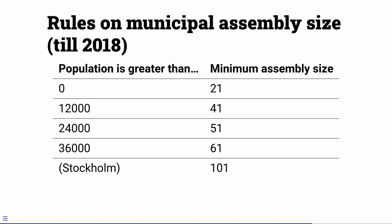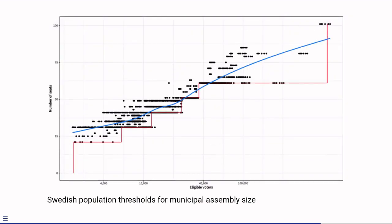Here are the rules on assembly size. They're all minima. If you exceed the population threshold on the left, you have to have at least this number of assembly seats. And here's what it looks like in practice. Population on the horizontal axis, assembly size on the vertical.